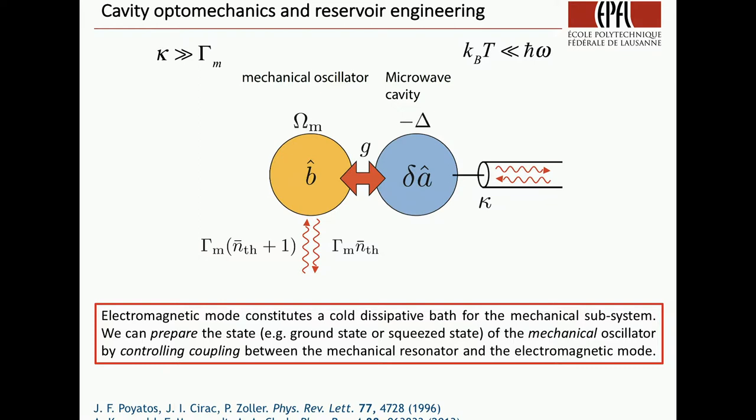Since we use the linearized Hamiltonian, this coupling G in the linear regime depends on the number of photons. It's some constant times square root of N_C. By changing the number of photons and the detuning of your pump, you can prepare interesting states of mechanics. This was first demonstrated for ions or suggested by Cirac, Zoller, and others back in 1996, with many experiments following. For optomechanics, it was suggested by Kronwald, Marquardt, and Clerk in 2013.